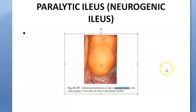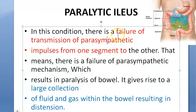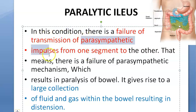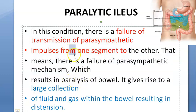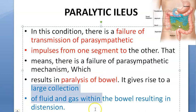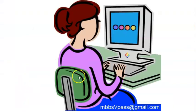This condition causes a distended abdomen. The nerves are present here — the parasympathetic ganglionic nerves are present — but they are not working. This could be temporary. There will be paralysis of the bowel and a large collection of fluid and gas within the bowel, resulting in abdominal distension.